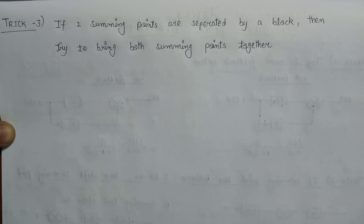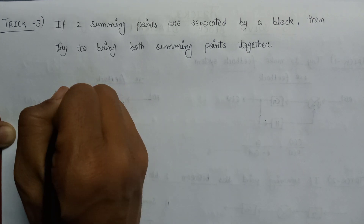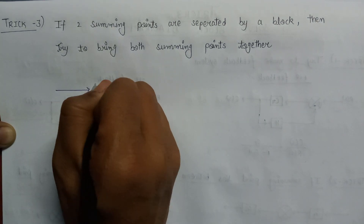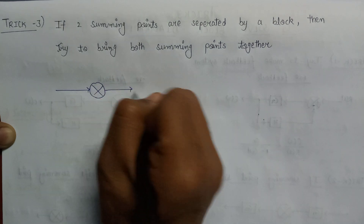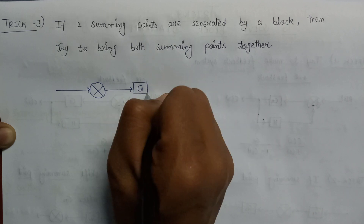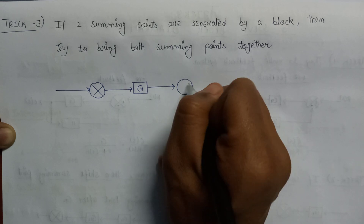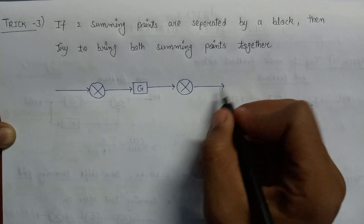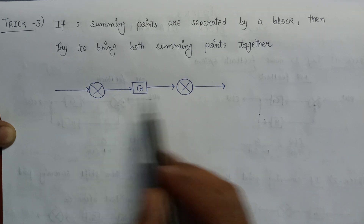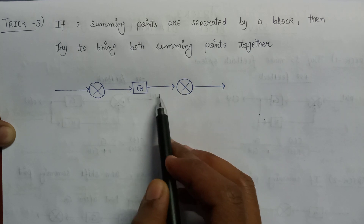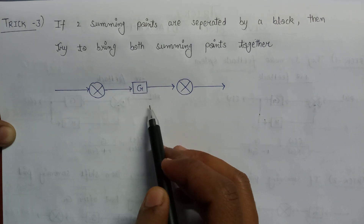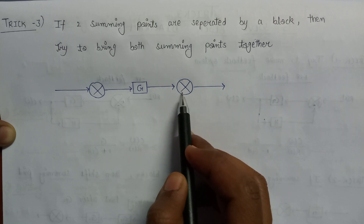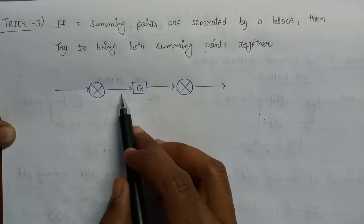Now let's discuss trick number 3. According to trick number 3, if two summing points are separated by a block, we just need to try to bring both summing points together. Here is the scenario: there is one summing point, separated by a block with gain G, and then a second summing point, with the overall output after the second summing point. Two summing points exist but are separated by this gain G. We just need to bring the two summing points together by shifting one summing point before or after the block.